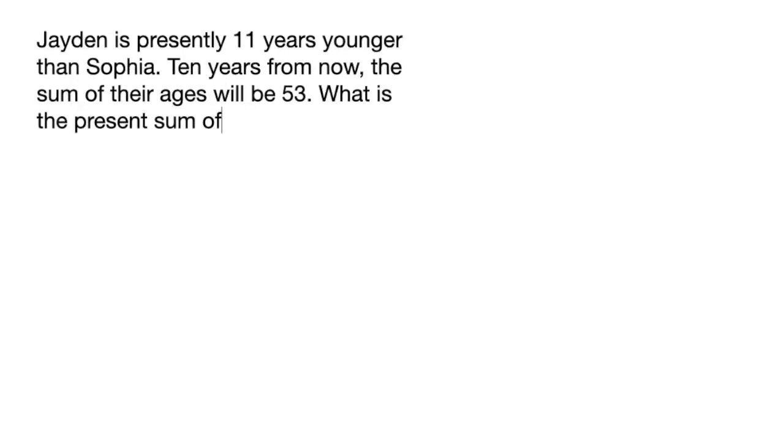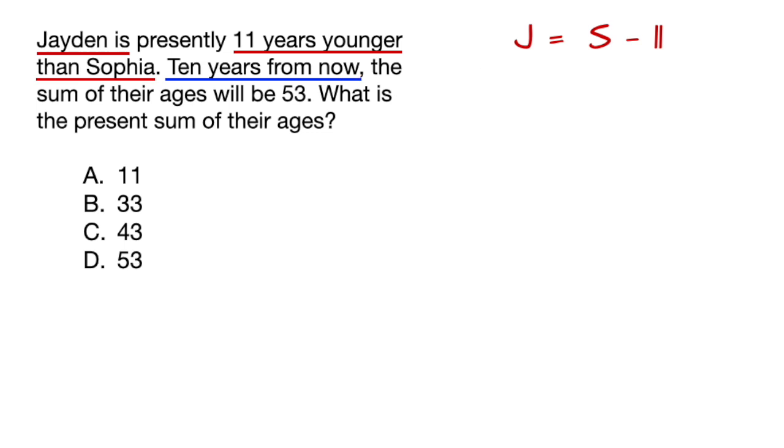Since everyone loves word problems, let's try one more. Jaden is means J equals 11 years younger than Sophia, meaning S minus 11. Ten years from now, so J plus 10 and S plus 10, the sum of their ages, meaning add those two together, will be 53 equals 53.